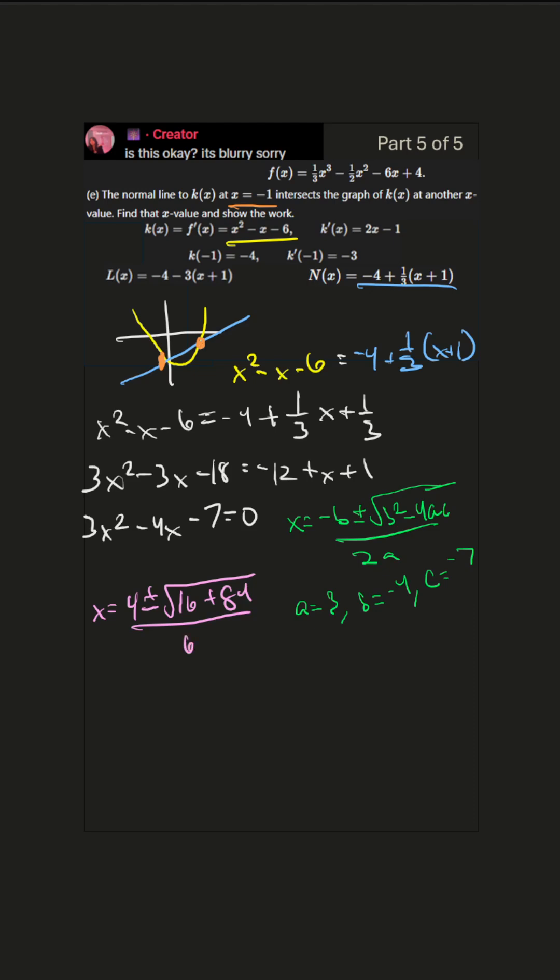Okay, we have x equals 4 plus or minus square root of 100, which is 10, over 6. So let's see, negative 6 over 6 is negative 1, and we have that one already, that's this one up here. And then 14 over 6 is 7 over 3. So there it is, that is where they intersect, where x equals 7 over 3.